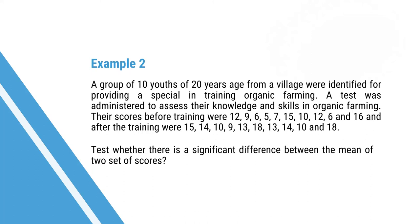A group of 10 youth aged 20 years from a village were identified for providing special training on organic farming. A test was administered to assess their knowledge and skills in organic farming. The scores before training were: 12, 9, 6, 5, 7, 15, 10, 12, 6, and 16. The same test was administered after training. The scores after training were: 15, 14, 10, 9, 13, 18, 13, 14, 10, and 18.